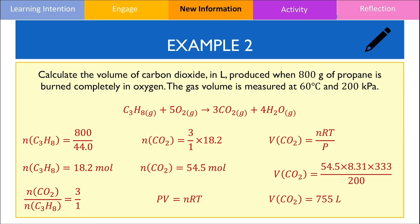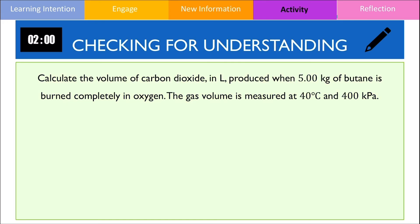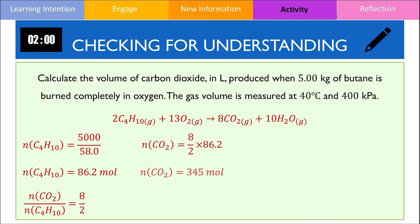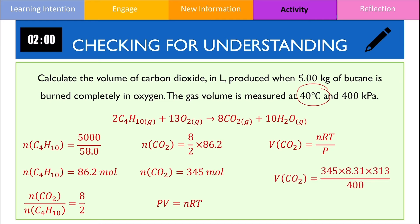I would now like you to have a crack at a similar question. Give yourself 2 minutes and then resume the video when you're ready to compare your answer. We start by writing the complete combustion equation for butane, then calculate the number of moles of butane — you should obtain 86.2 moles. According to the molar ratio, the amount of carbon dioxide is 4 times that of butane, giving 345 moles. Because combustion was carried out under non-standard conditions, we use the universal gas equation to solve for V, remembering to convert degrees Celsius to Kelvin by adding 273. Inserting the values gives 2.24 × 10³ litres.